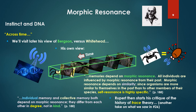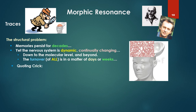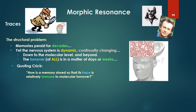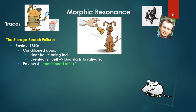Rupert then starts his critique of the history of trace theory. Firstly, there's a structural problem: memories persist for decades, yet the nervous system is dynamic, continually changing down to the molecular level and beyond. The turnover of all molecules is a matter of days or weeks. Quoting Francis Crick, our double helix discoverer: how is memory stored so that the trace is relatively immune to molecular turnover? But no mechanism has ever been discovered, including Crick's complex method of replacing molecules one at a time. So, the search failure.